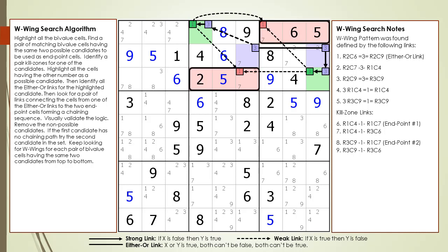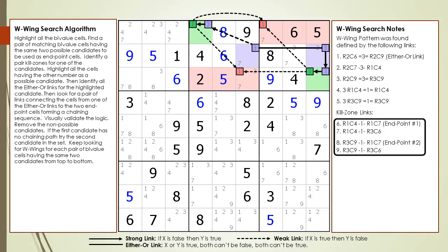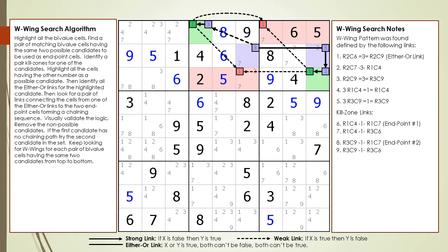As stated, the kill zone is defined by cells sharing a house with both endpoint cells, shown highlighted in red. There are two sets of weak links between the endpoint cells and the target candidates to kill in the kill zone as shown.